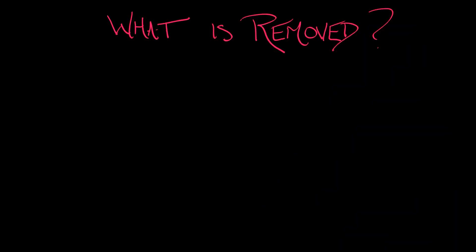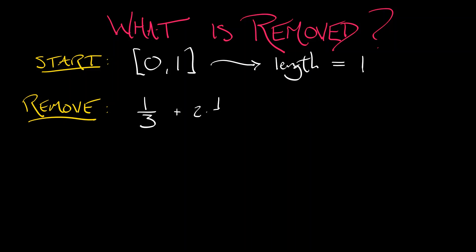Now let's think. What have we removed from this interval? We start with that interval. It has length one. I remove the middle third, so I'm taking away one-third of the length. Then I remove two subintervals of length one-ninth. Then I remove four subintervals of length one-twenty-seventh. At the nth step, I'm removing two to the n subintervals of length one over three to the n plus one. To add up the total amount that I'm removing, I take the sum as n goes from zero to infinity of two to the n divided by three to the n plus one.